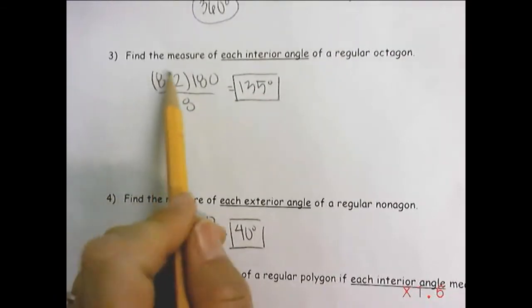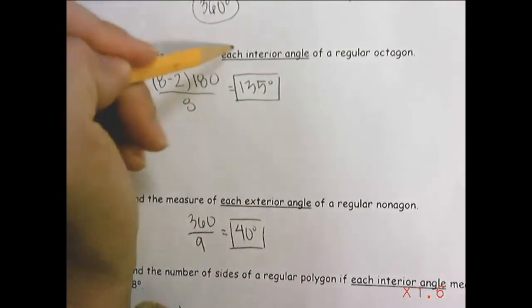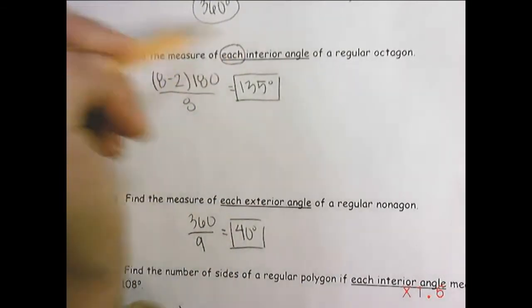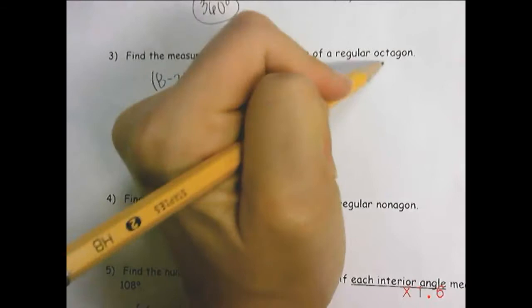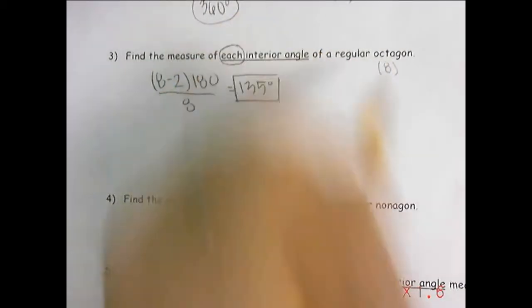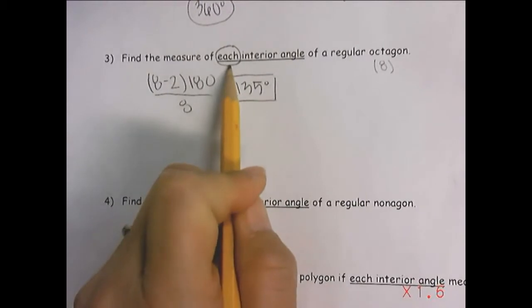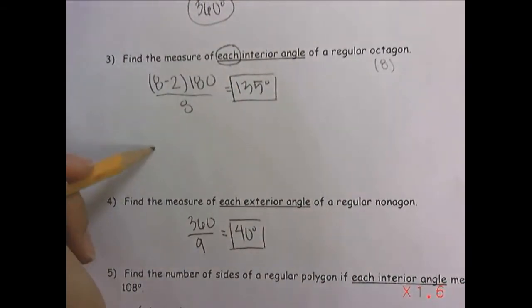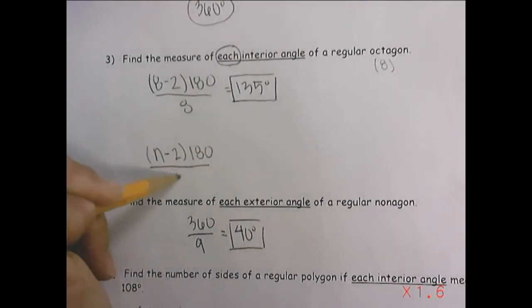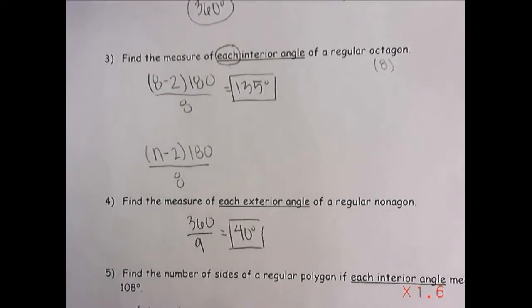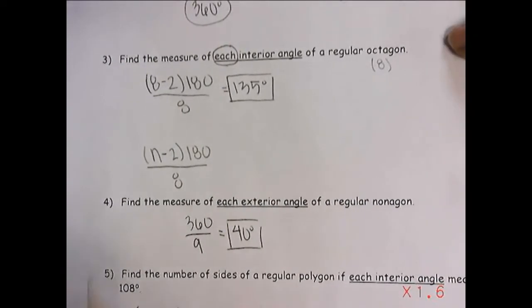This one, find the measure of each interior angle of a regular octagon, and don't forget that's eight, an octagon is eight sides. So this time we're trying to find each, and the formula for that is n minus two times 180, but you're going to have to divide it by eight because that's the number of sides.